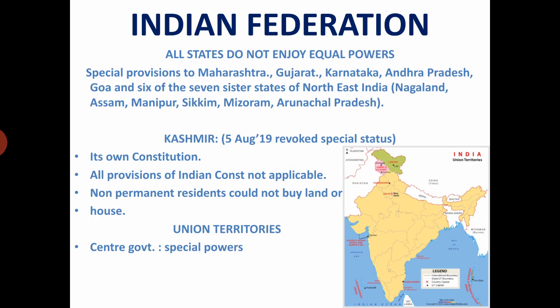The state had its own constitution. The state legislature had residuary powers. The centre could make laws for Jammu and Kashmir only with regard to foreign affairs, currency, defence and communication. Non-permanent citizens could not buy land or house in Jammu and Kashmir. However, presently it is a union territory. The union territories also have very little power, and the central government has special powers to run them.